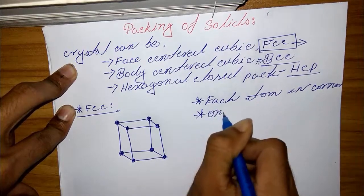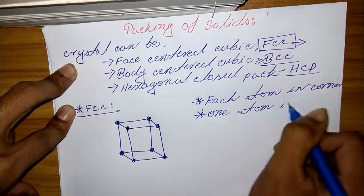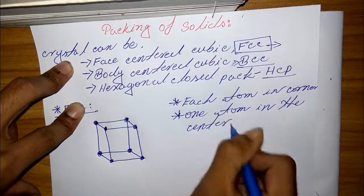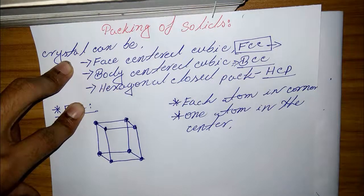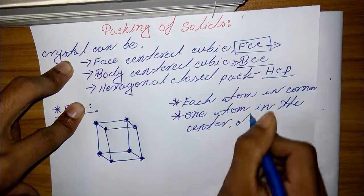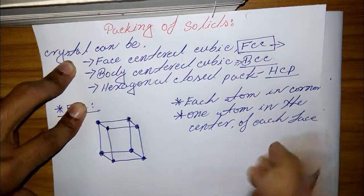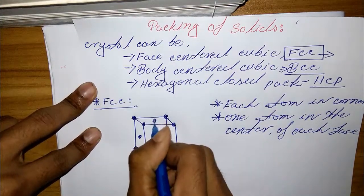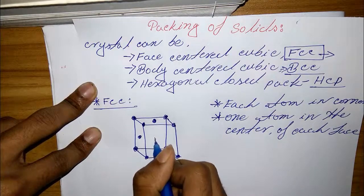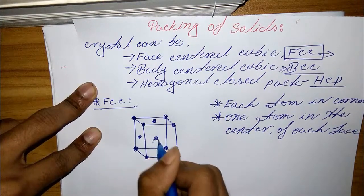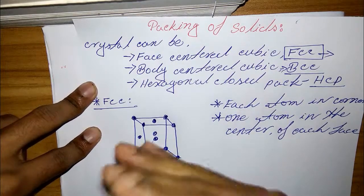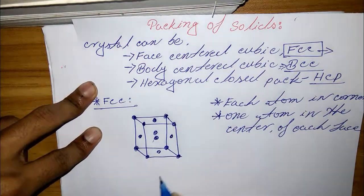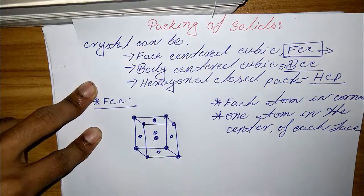Next, there is one atom in the center of each face. In this face there is one atom in the center, in this one, in this one, and in the back side as well — one atom at the center of each face.